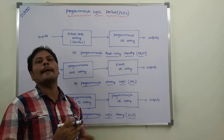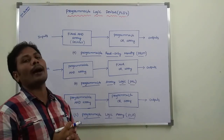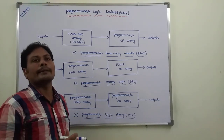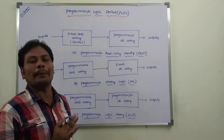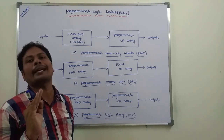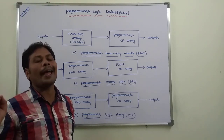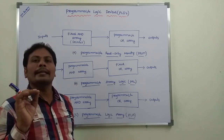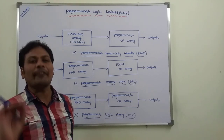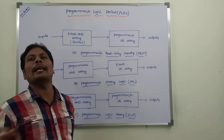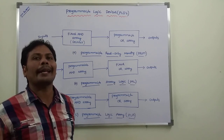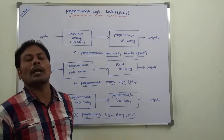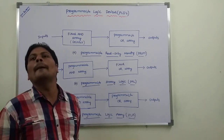While in the case of PAL — Programmable Array Logic — the AND Array is Programmable and the OR Array is Fixed. While in the case of PLA — Programmable Logic Array — both the AND Array and OR Array are Programmable. This is the main difference between these three Programmable Logic Devices: PROM, PAL, and PLA.